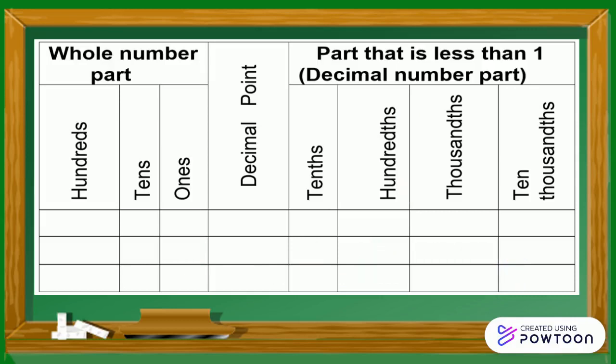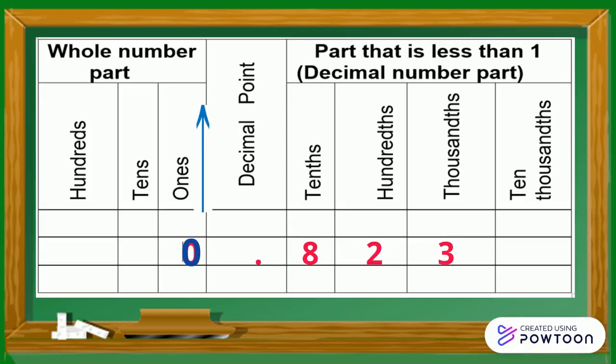Lastly, let us put the decimal number 0.823 in the place value chart. 0 is in the ones place value in the whole number part, while in the decimal number part,